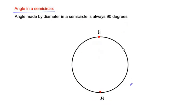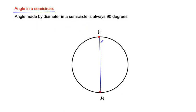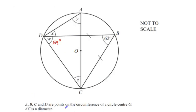To illustrate: if two points A and B act as the diameter of a circle, and those two points make an angle at any point on the semicircle, that angle is always 90 degrees. This is the angle in a semicircle theorem, and we will now apply it to the given example.